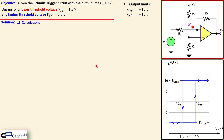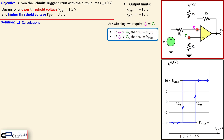Now let's look at the calculations. First we designate two nodes: node X at the non-inverting input and node Y at the inverting input. A very important statement: at switching we require that VX equals VY, because the op-amp is always comparing the two inputs. If VX is larger than VY, the output is at Vmax (+10 V); if VX is smaller than VY, Vout is Vmin.